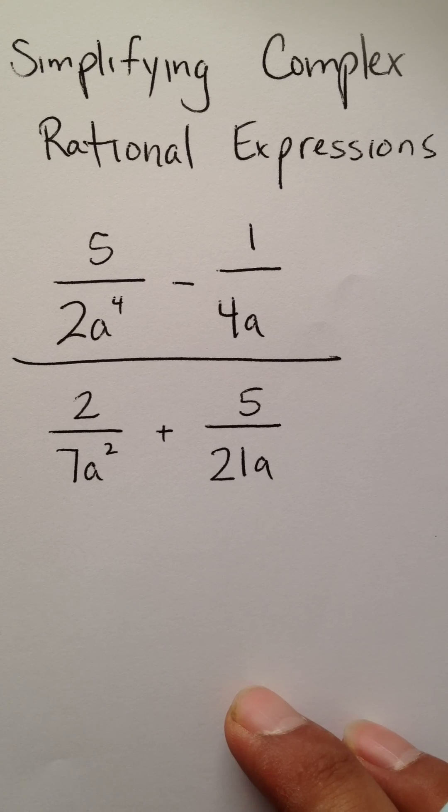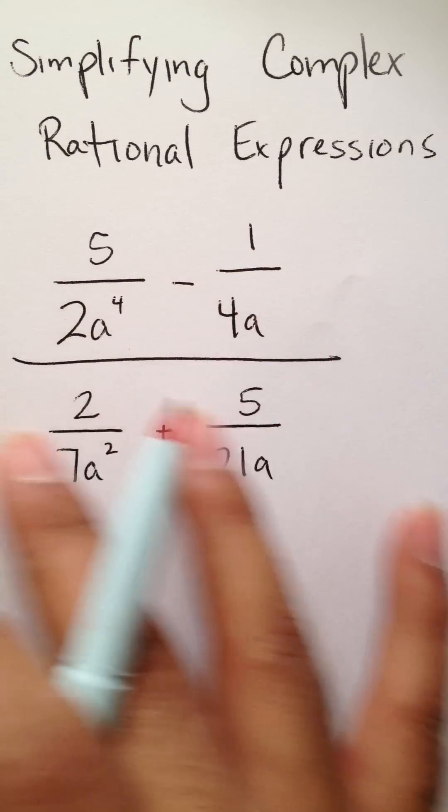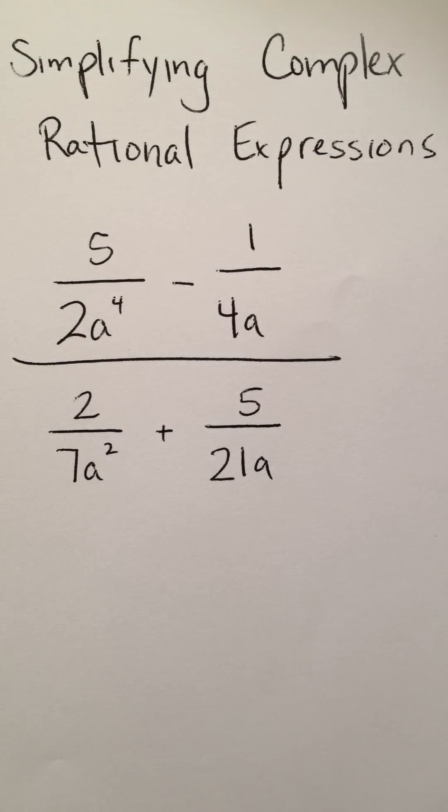Now there are many ways to actually simplify a complex rational expression. I think most people get scared with this problem because they see a fraction, another fraction, on top of all this other fraction, so it seems overwhelming.